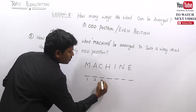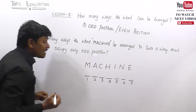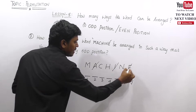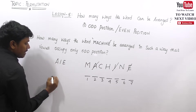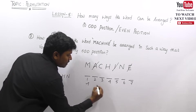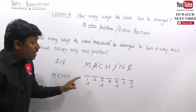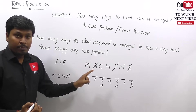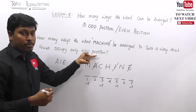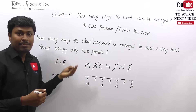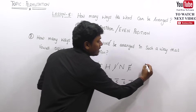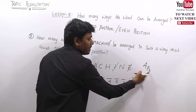There are seven letters in MISSION at positions one through seven. The vowels are I, O, I — that is, A, I, E — three vowels. There are four odd positions: one, three, five, and seven. We need to place three vowels into four odd positions, so this is written as 4P3.